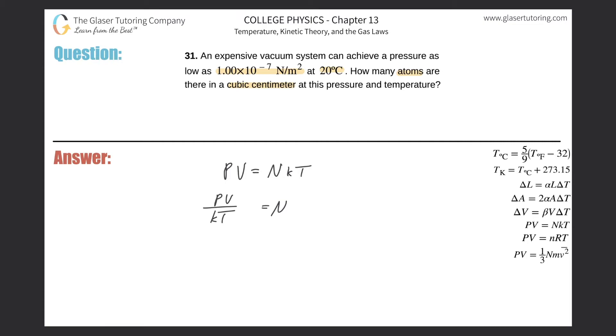So what's the pressure? The pressure here has to be in Pascals or Newtons per meter square. They're the same thing. They give that to us. So this is simply going to be 1 times 10 to the minus 7th, multiplied then by the volume. Now the volume has to be in cubic meters, but they told us a cubic centimeter. So I have to do a quick conversion.